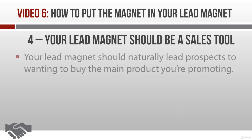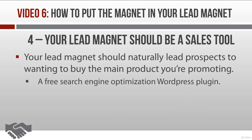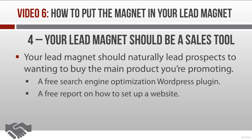Secondly, your product should naturally lead prospects to wanting to buy the main product you're promoting. For example, a free search engine optimization WordPress plugin would naturally lead to people wanting to buy a course on search engine optimization, because they'd get more benefit out of the plugin. Another example: people who opt into your list to get a report about how to set up a website will naturally purchase necessary items through your affiliate links, things such as a domain name or web hosting.